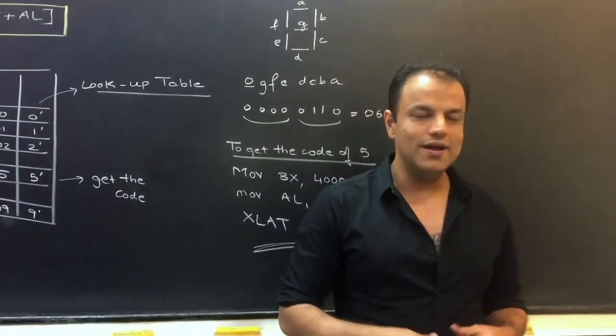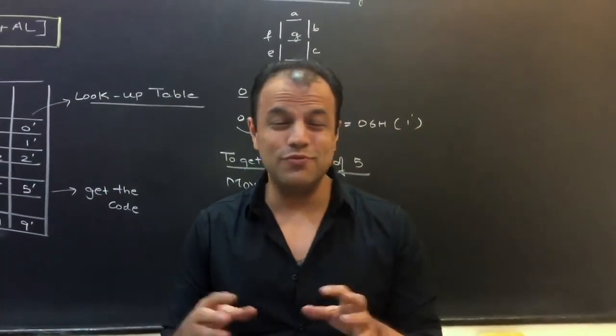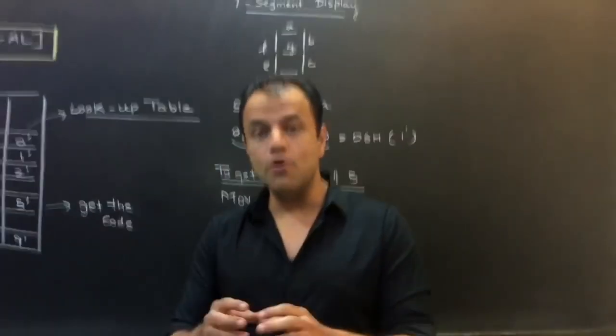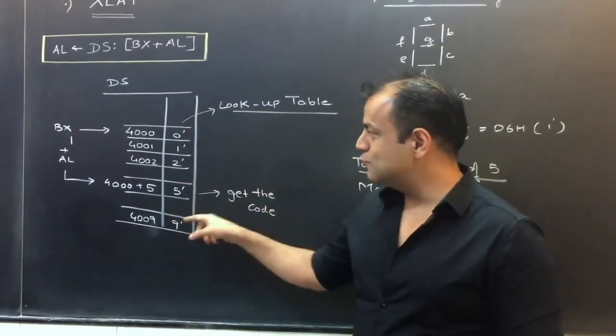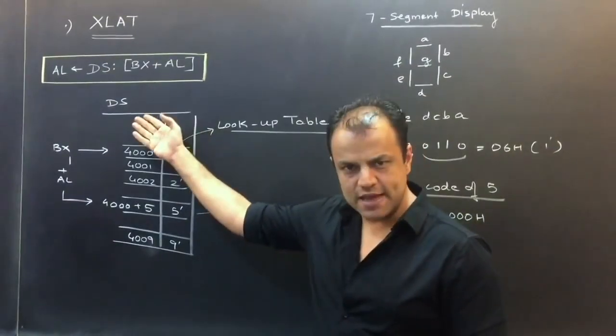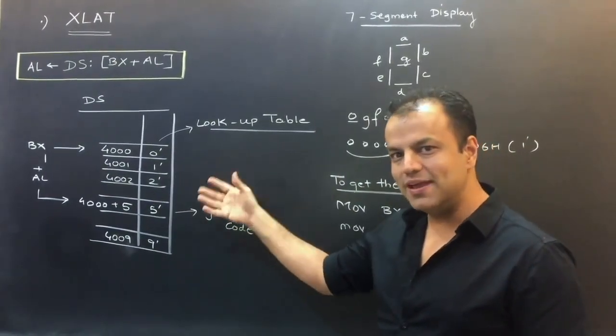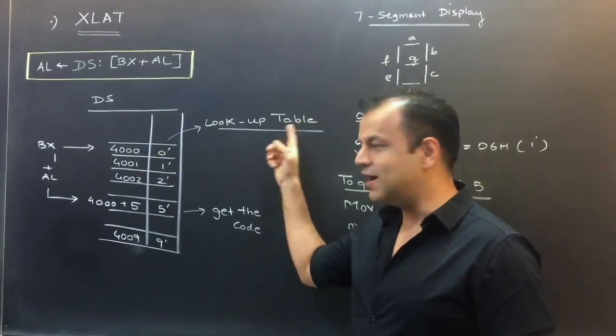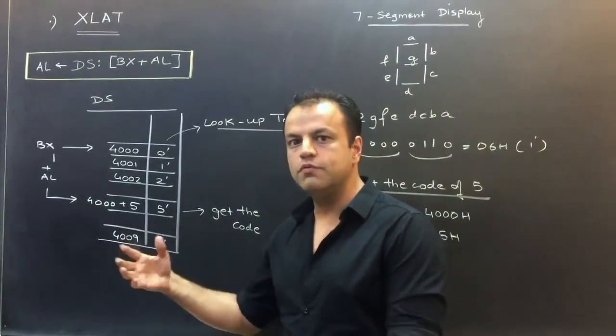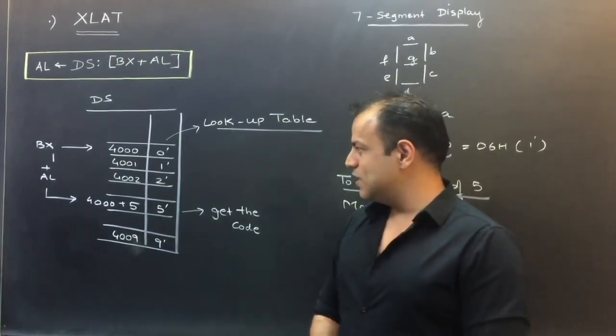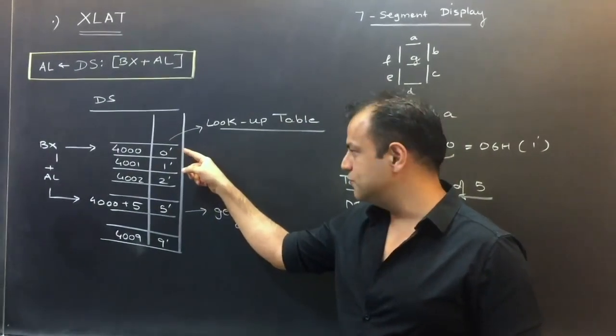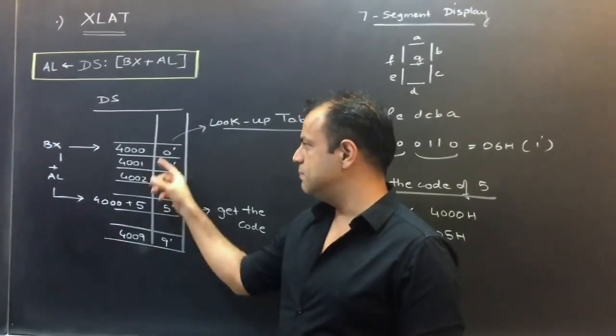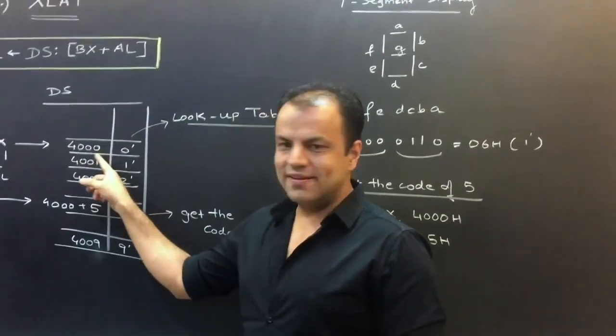Now, these seven segment codes are never going to change. So, instead of generating them by some formula, they are simply stored in the memory. The seven segment codes of all digits from 0 to 9 are stored in the memory in the data segment in the form of a table. Such a table which is used for reference is called a lookup table. I repeat, lookup table because you always look at the table for reference, hence the name lookup table. So, this lookup table has codes, seven segment codes for 0, 1, 2, up to 9.